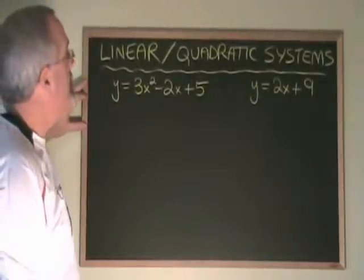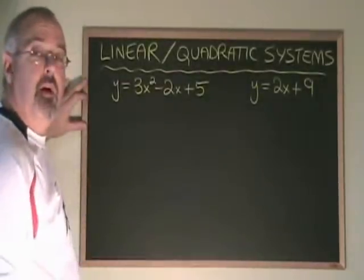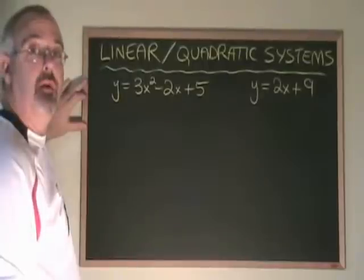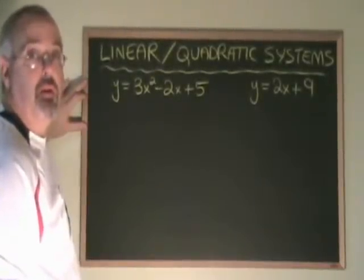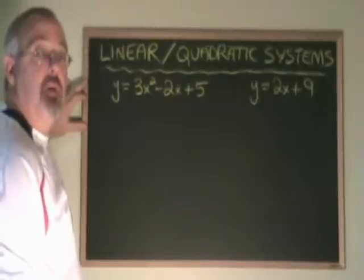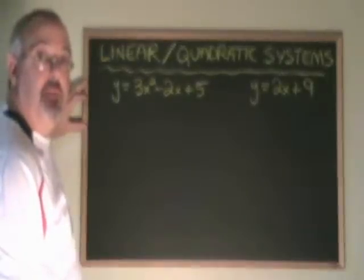Now, we have a linear quadratic system where we are not given two straight lines. We are given a straight line and a parabola, and we have to find the point or points where they cross. Most straight lines will cross a parabola in two places.